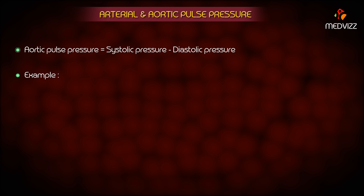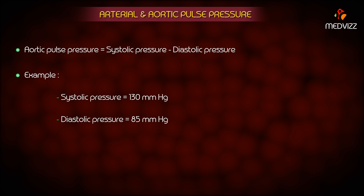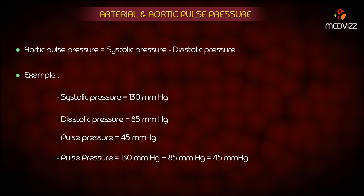For example, if the systolic pressure is 130 mmHg and the diastolic pressure is 85 mmHg, then the pulse pressure is 45 mmHg. Pulse pressure equals systolic pressure minus diastolic pressure.